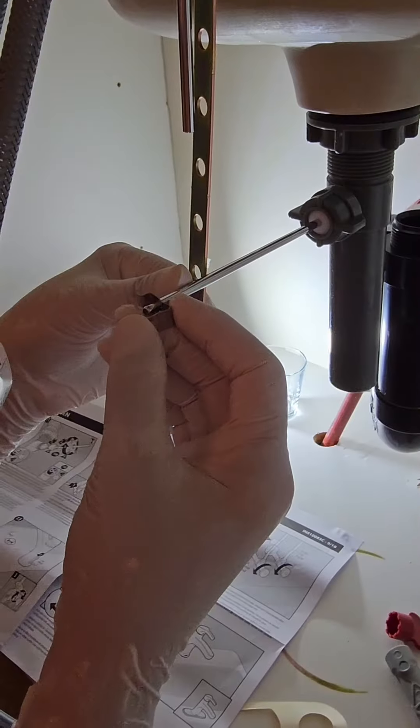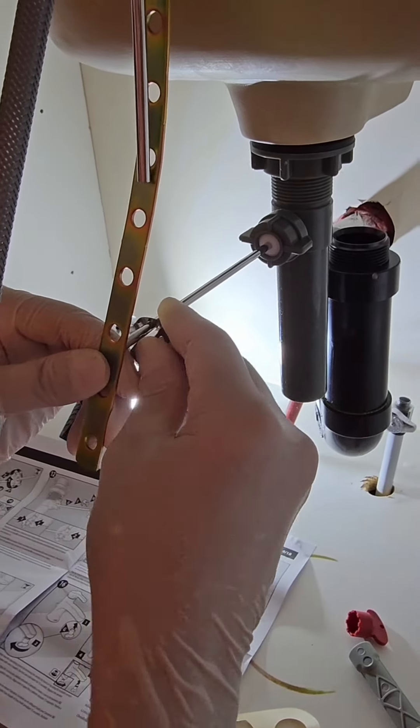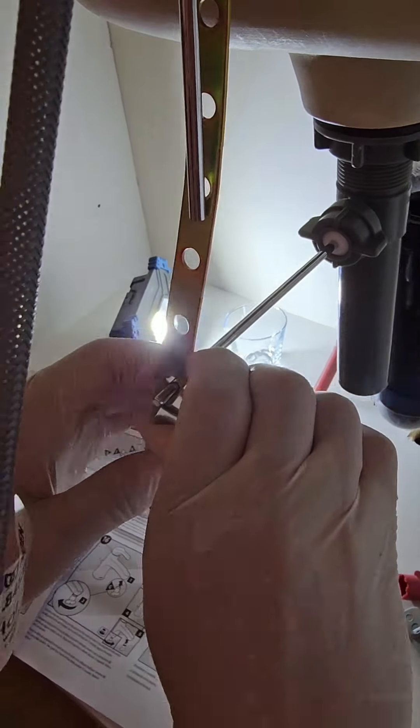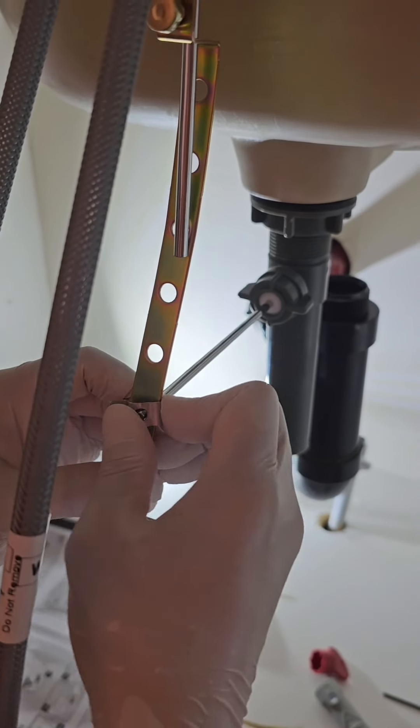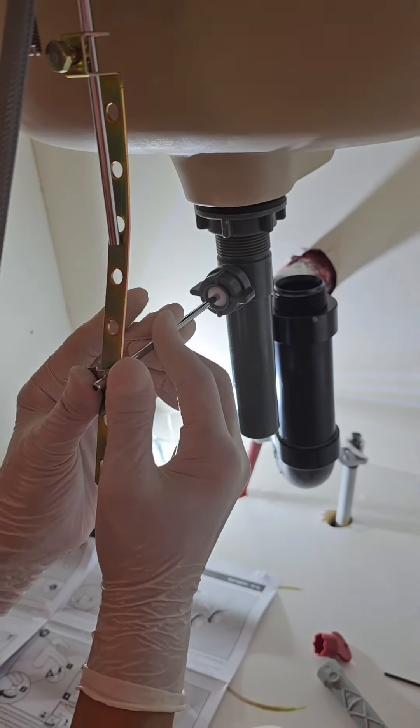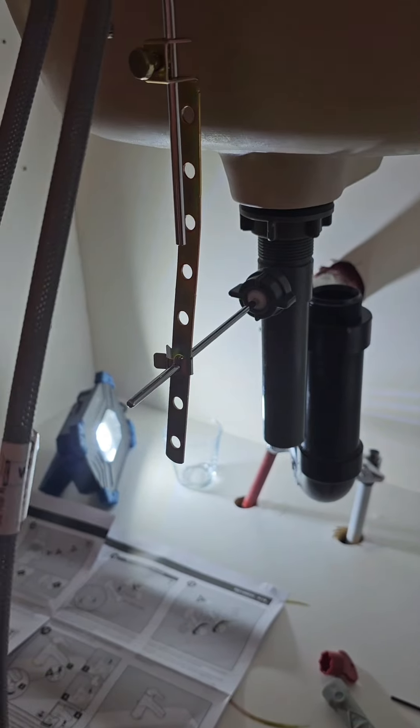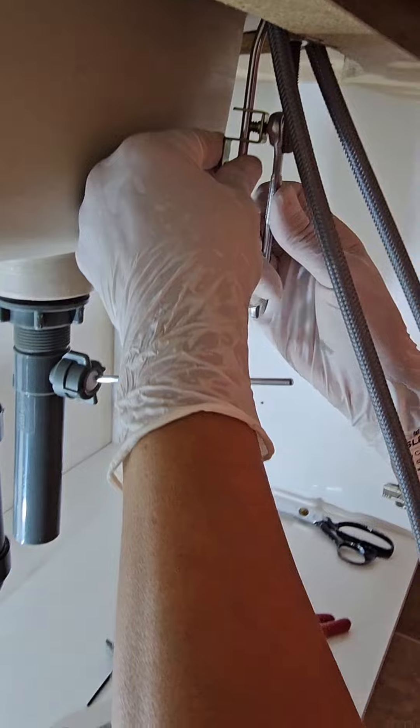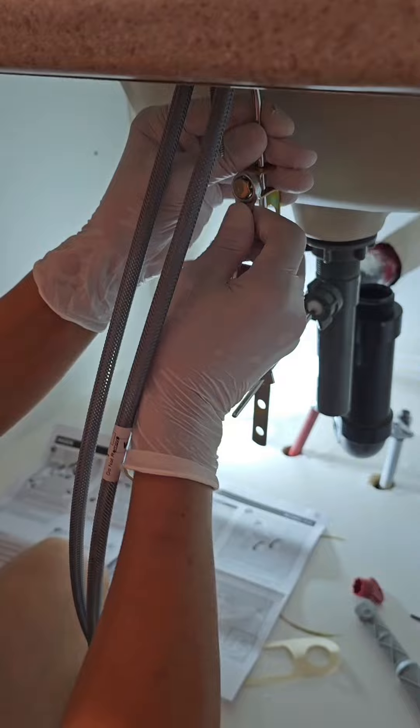Slide one end of the spring clip onto the pivot rod. Typically, the third hole of the clevis strap works best. Slide the other end of the clip in to secure it in place. Give it a try to see if it easily lifts up the stopper. Adjust the height of the lift rod using the clevis screw if needed.